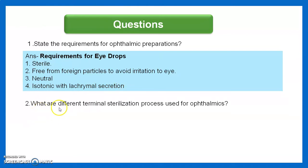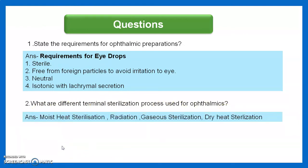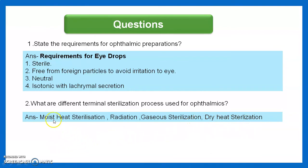Question 2: What are the different terminal sterilization processes used for ophthalmics? These include moist heat sterilization, radiation sterilization, gaseous sterilization, and dry heat sterilization. Among these, moist heat sterilization is the preferred method.